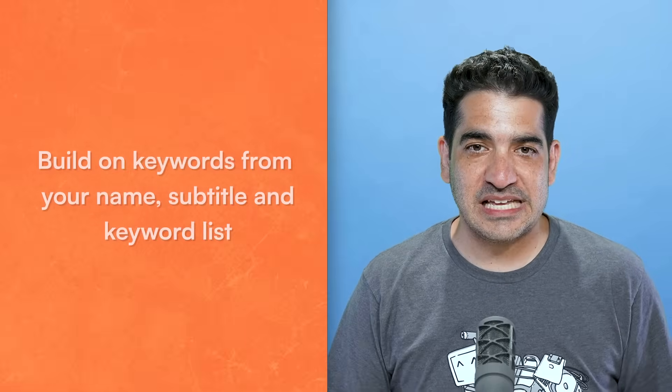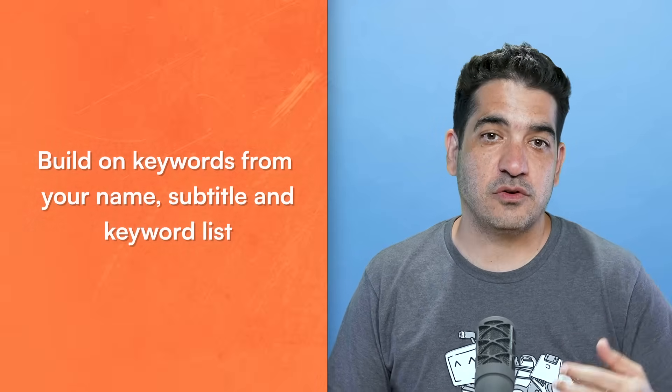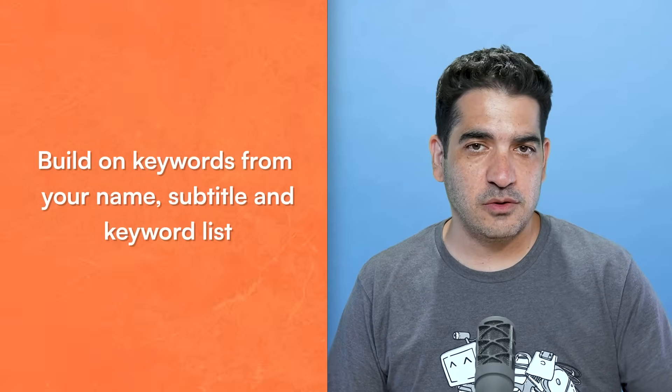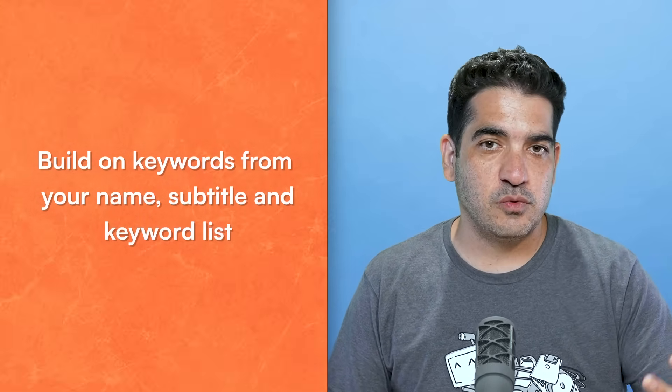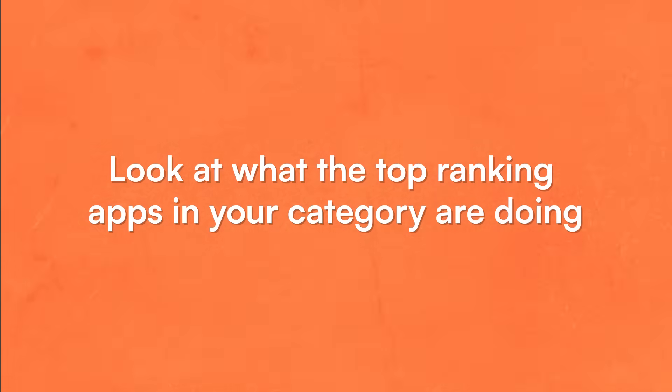Then use keywords that extend the keywords you're already using in the name, subtitle, and keyword list, just as you would with everything else. A quick trick: look at what the top ranking apps in your category are doing. I'm talking about direct competitors, similar apps, or even adjacent ones.